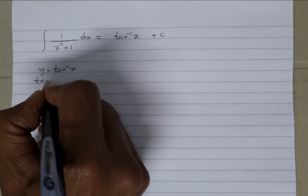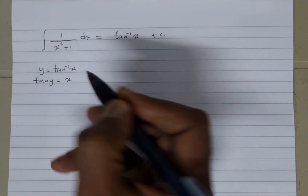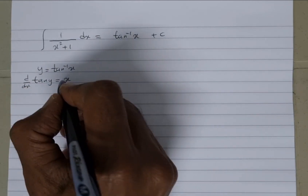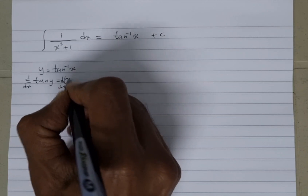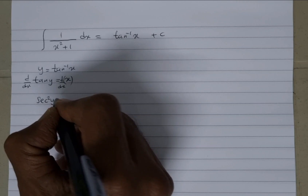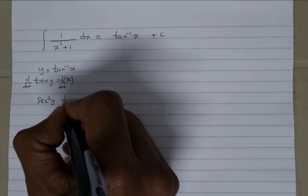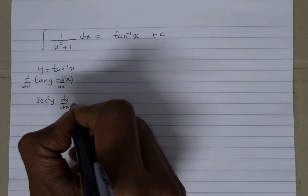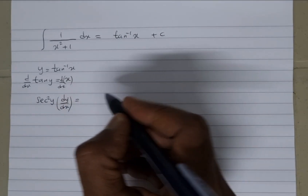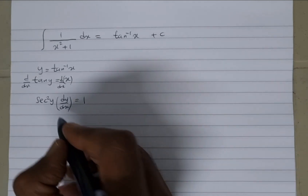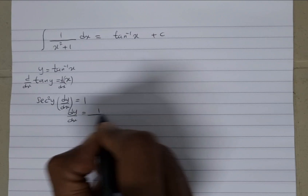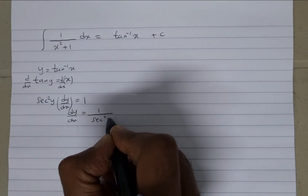So that becomes tan of y is equal to x. And if we were to differentiate this, we're going to say ddx of tan y and ddx of x. So if you differentiate tan y, you should know that this is going to come down to sec squared y, and you're just going to have to differentiate it implicitly. So you've got the dy/dx there, and that's going to be equal to differentiating x, you get 1.